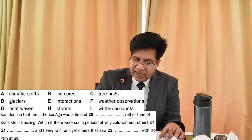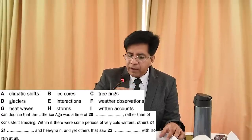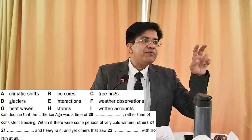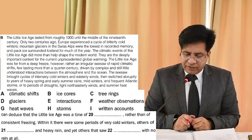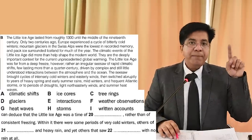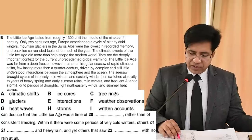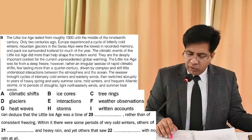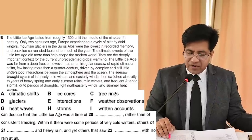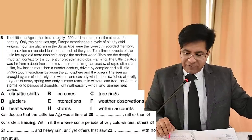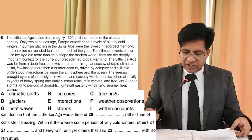Question 21: 'Rather than consistent freezing, within it there were some periods of very cold winters, one thing, others of dash and heavy rain.' The answer will come alongside cold winters and heavy rains. Come back to paragraph B and look for the words 'winters' and 'rains.' Found it — last three lines: 'The seesaw brought cycles of intensely cold winters and easterly winds, then switched abruptly to years of heavy spring and early summer rains.' Intensely cold winters is already given.